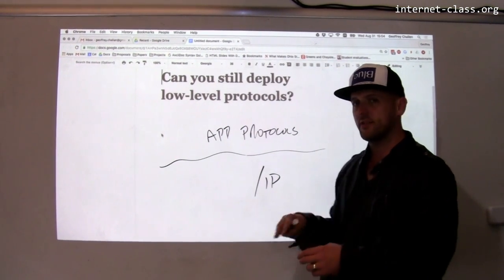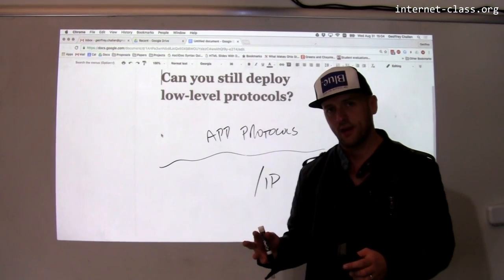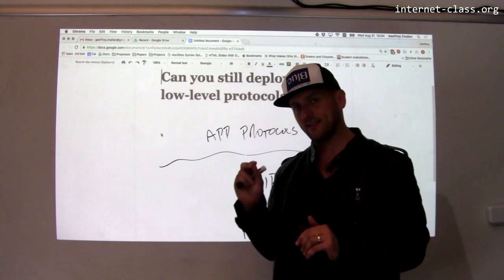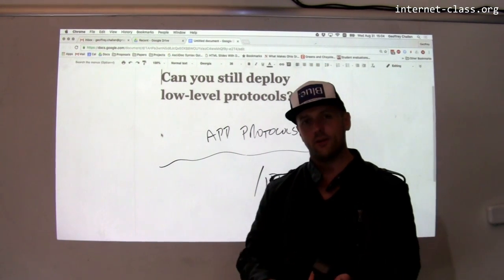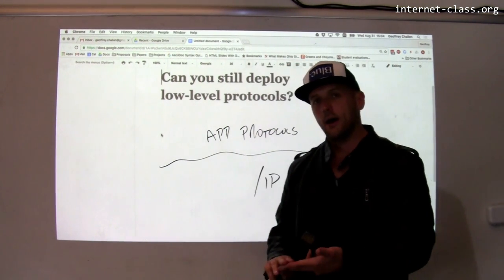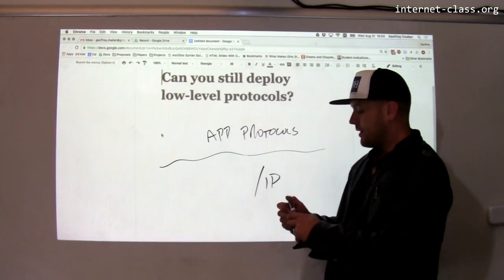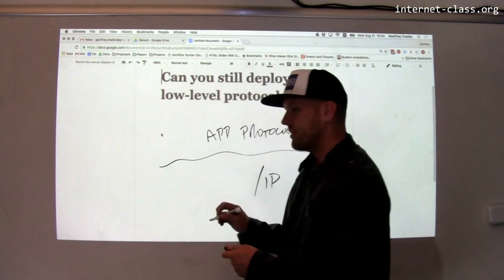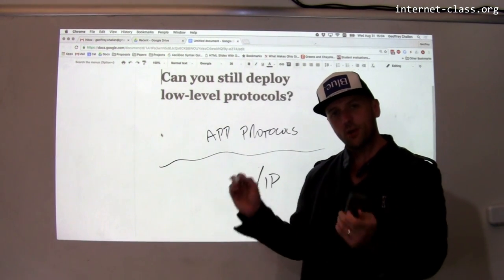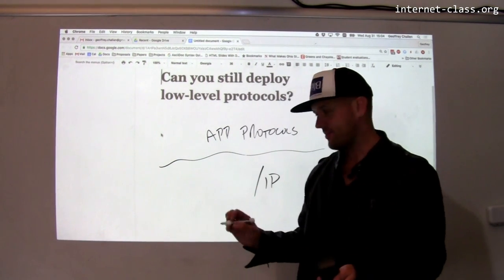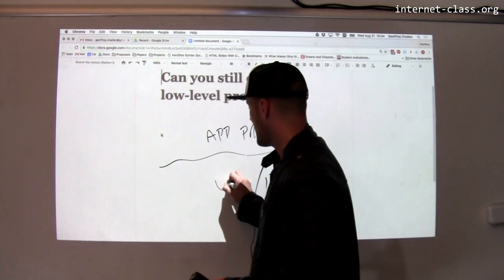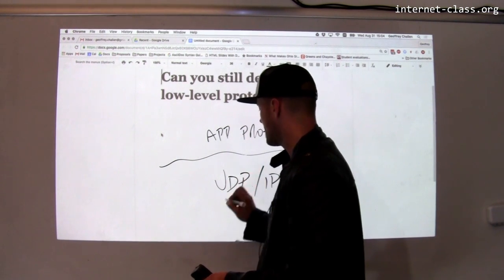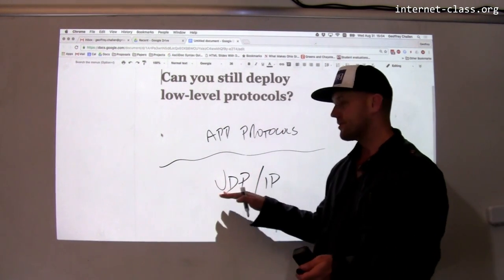IP provides best-effort packet delivery — not reliable, not ordered. To get reliability and ordering, we add TCP. But what if you don't want reliability and ordering? There's another choice: UDP.